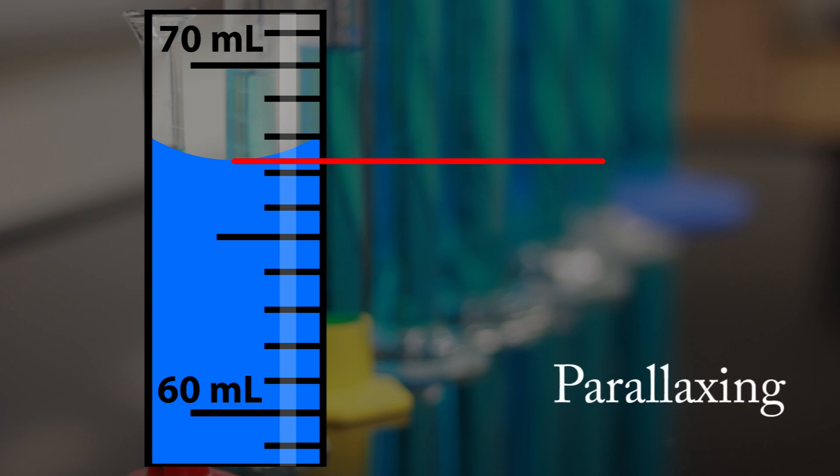Therefore the meniscus must be read at eye level. Notice that this graduated cylinder has marks for every milliliter. But we can tell if the bottom of the meniscus falls between these marks and therefore we need to estimate to the nearest tenth of a milliliter for this 100 milliliter graduated cylinder. The volume here is approximately 67.3 milliliters with the correct number of significant figures.